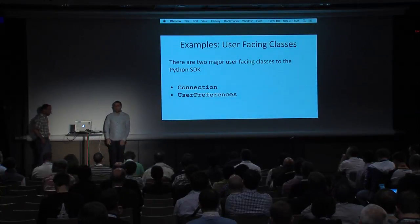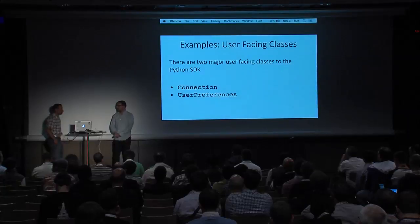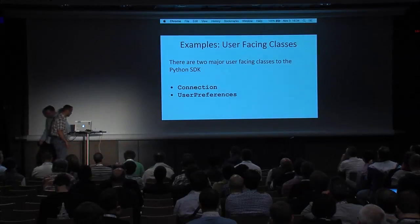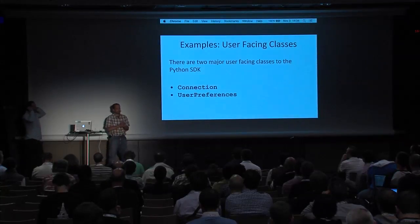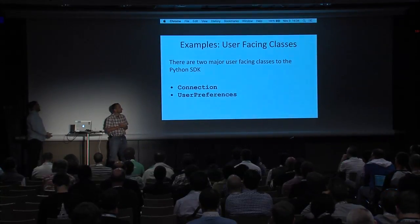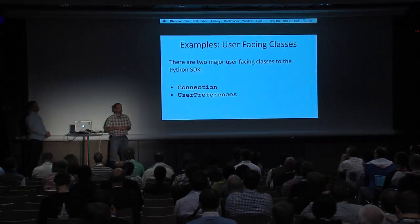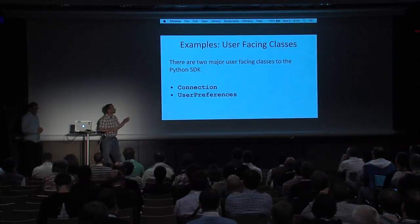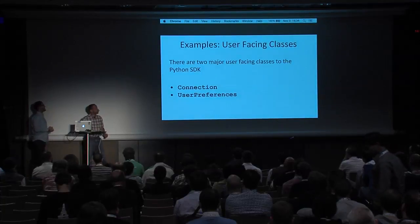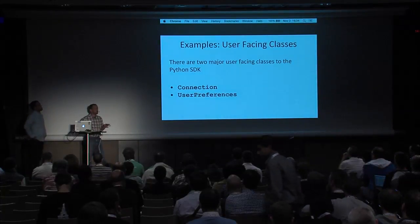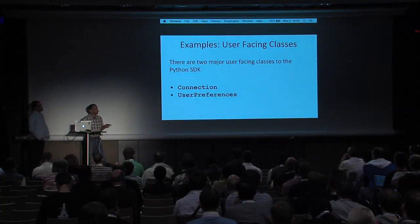I'm going to pass it off to Terry, who's going to run through some code examples. I wanted to start out talking about what it's like to work with the SDK from the user persona, and then we'll get a little bit more into the developer persona. There are two main user-facing classes: the connection class and the user preference class. Ideally these would be the only classes you'd really be interacting with as a user.